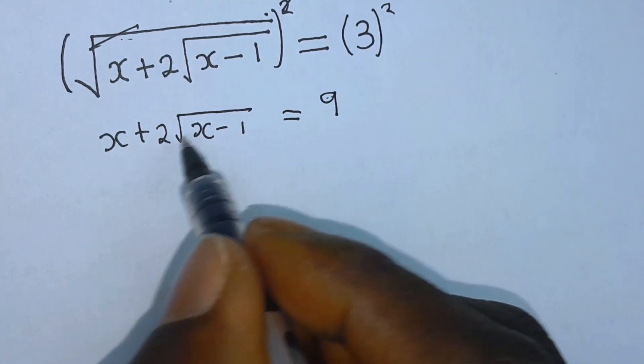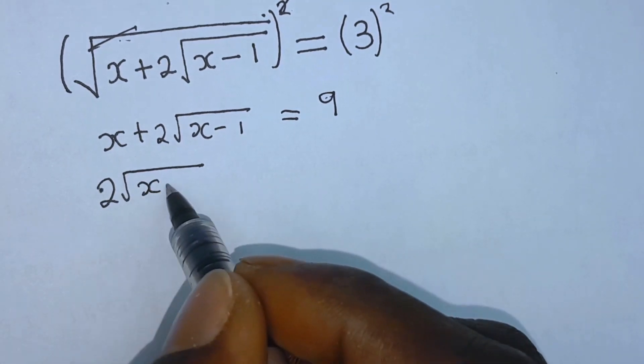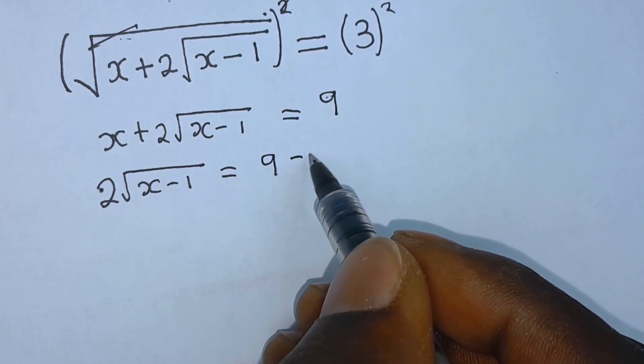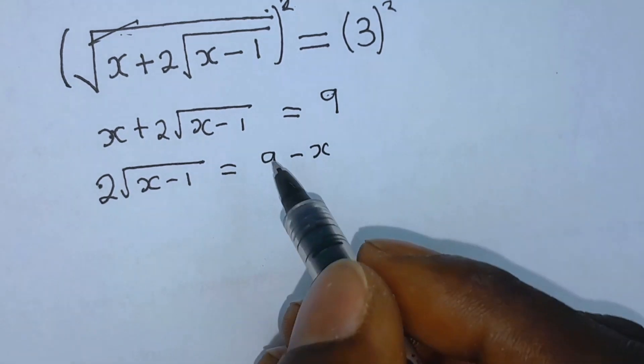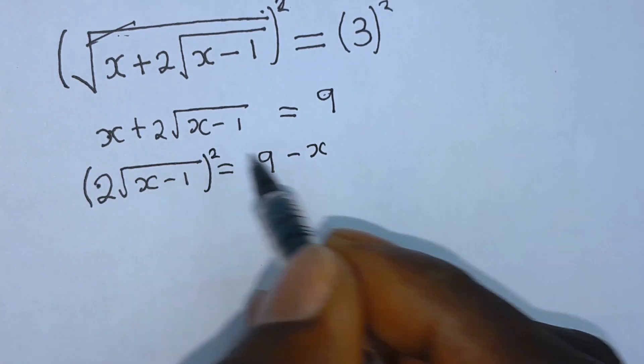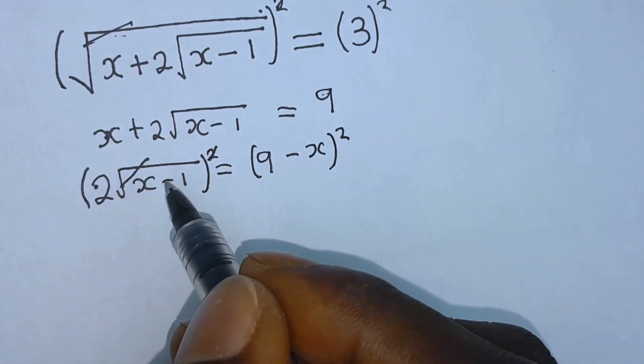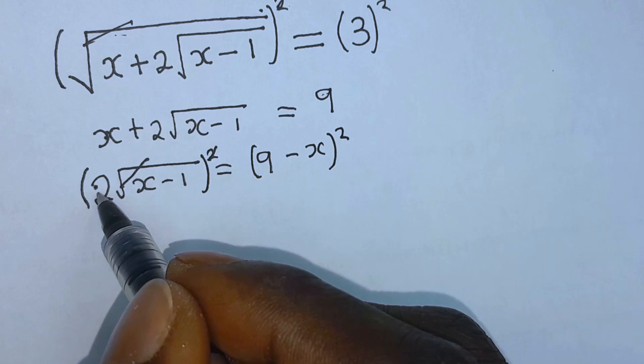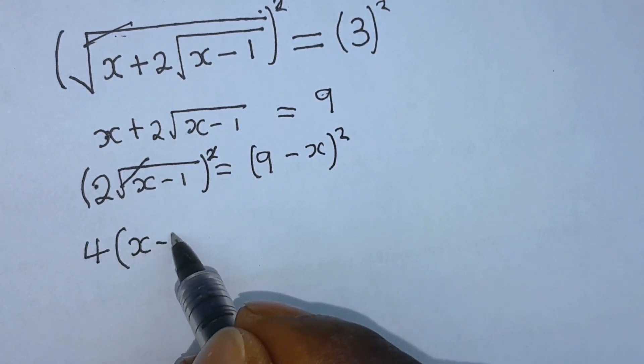From this step, isolate the radical term: square root of x minus 1 equals 9 minus x. If x crosses the equality sign, it becomes negative. Now square both sides. The squared cancels the square root. Don't forget, this squared is 2, meaning we have 4 in bracket times x minus 1.